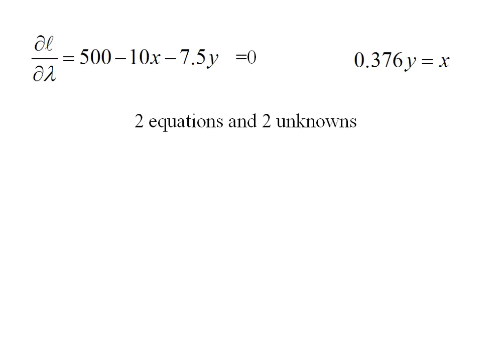We have two equations and two unknowns. I can simply substitute in and then solve for x and y, my optimal bundles. If I substitute in for x, I get 500 minus 10 times 0.376y minus 7.5y equals 0.